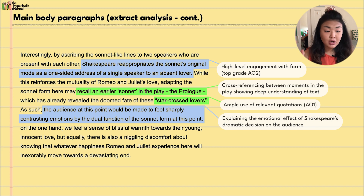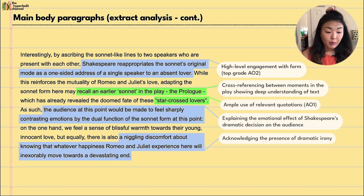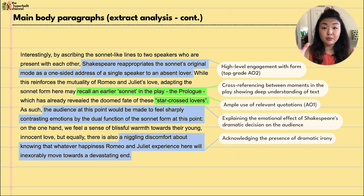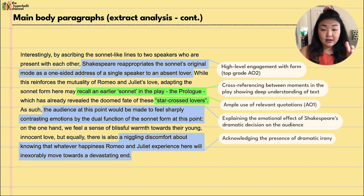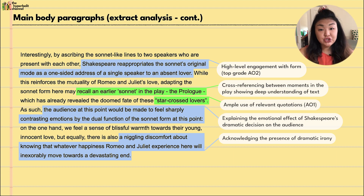As such, the audience at this point would feel sharply contrasting emotions due to the dual function of the sonnet form. On the one hand they feel a sense of blissful warmth towards the young innocent love, but equally there's a niggling discomfort, knowing that whatever happiness Romeo and Juliet experience here will inexorably move towards a devastating end. That awareness complicates our sense of joy — we know this will ultimately come to a tragic and devastating end — a complicated dualistic emotion Shakespeare creates through the sonnet form.